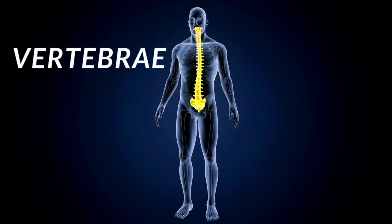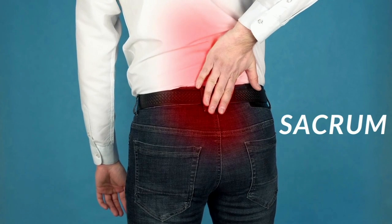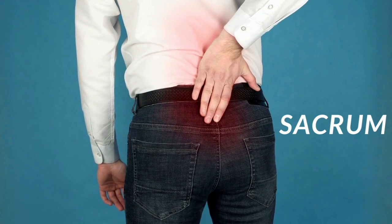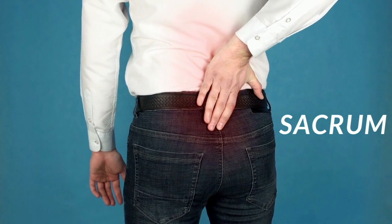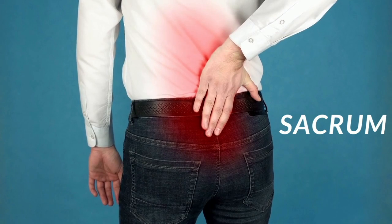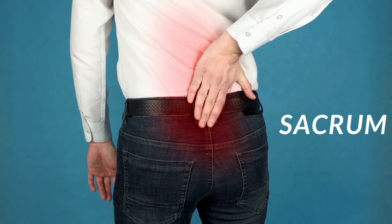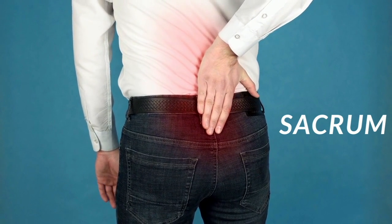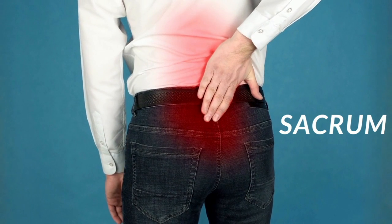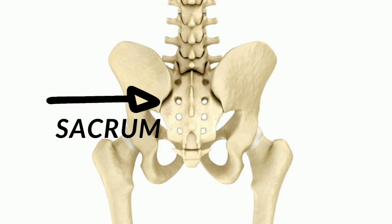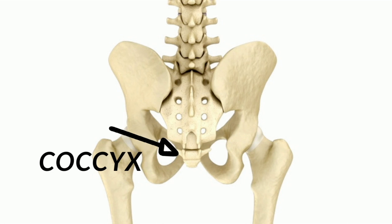Then at the very bottom you have your sacrum. A way to remember this is that the bottom area of your backside, closest to your buttocks, is a sacred area — your sacred sacrum is located at the very bottom. Right beneath the sacrum is a tiny little bone called your coccyx bone — that is your tailbone, the very last bone.